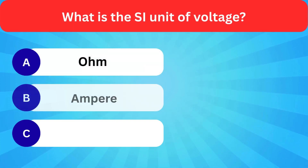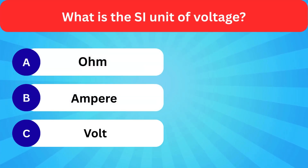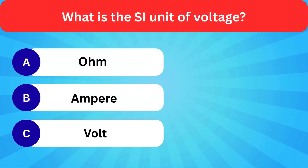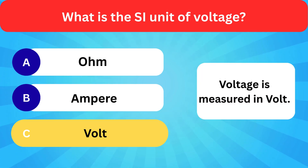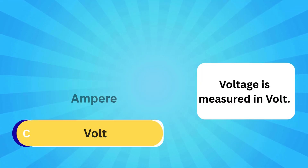What is the SI unit of voltage? Options: Ohm, Ampere, Volt. Correct answer is Volt. Voltage is measured in Volt.